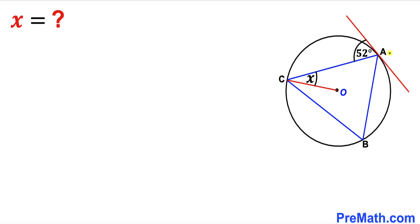Such that point A is our point of tangency, and moreover, this chord AC makes an angle of 52 degrees with this tangent line. Now we are going to calculate this angle x.